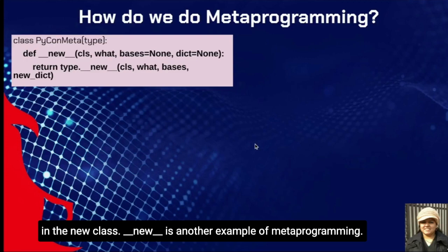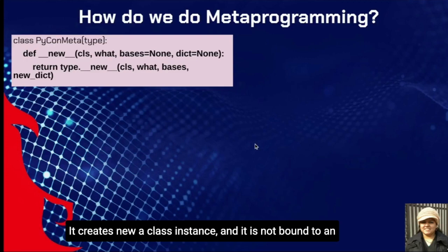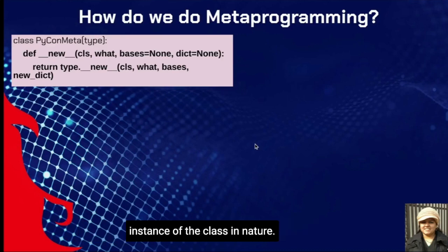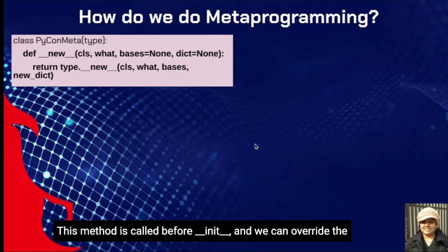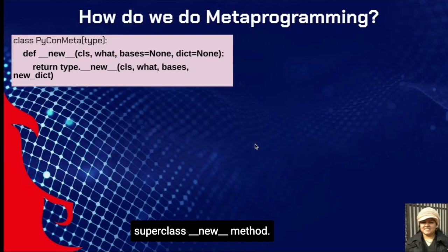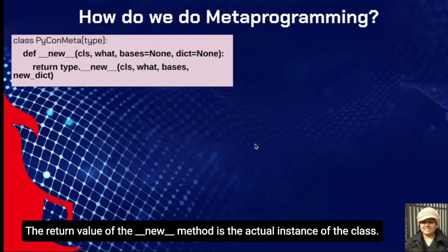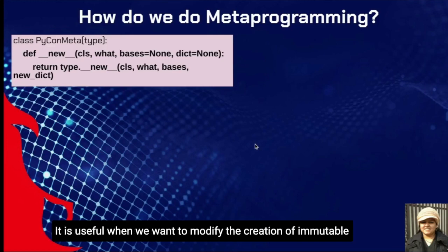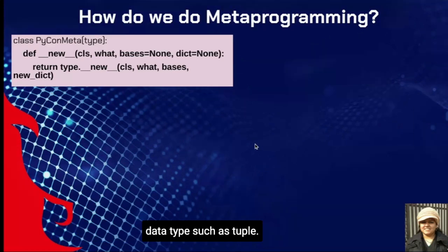The __new__ method is another example of metaprogramming. It creates a new class instance and is not bound to an instance of the class. This method is called before __init__ and we can override the superclass __new__ method. The return of __new__ is the actual instance of the class. It is useful when we want to modify the creation of immutable data types such as tuple.